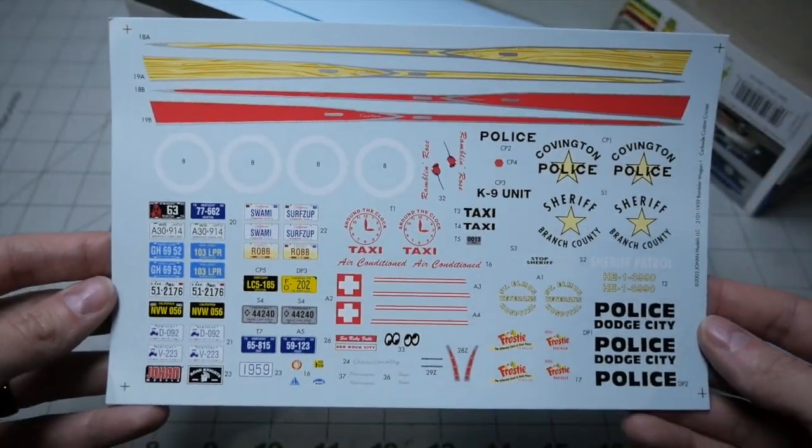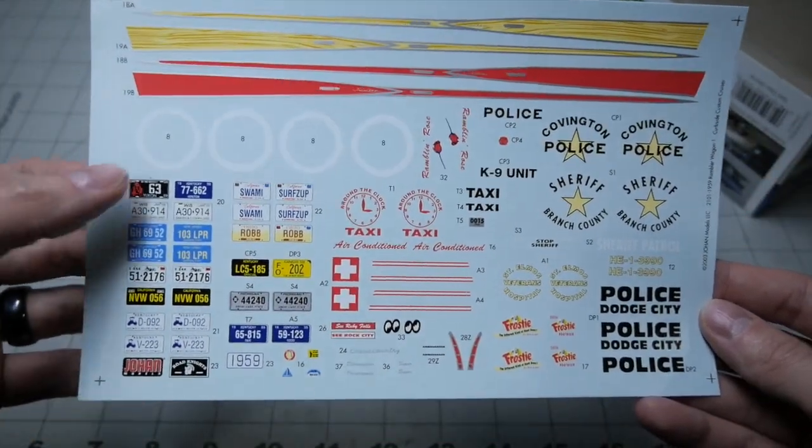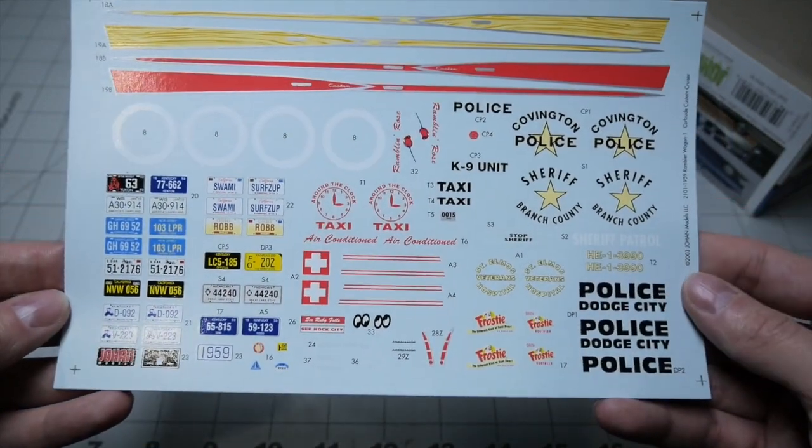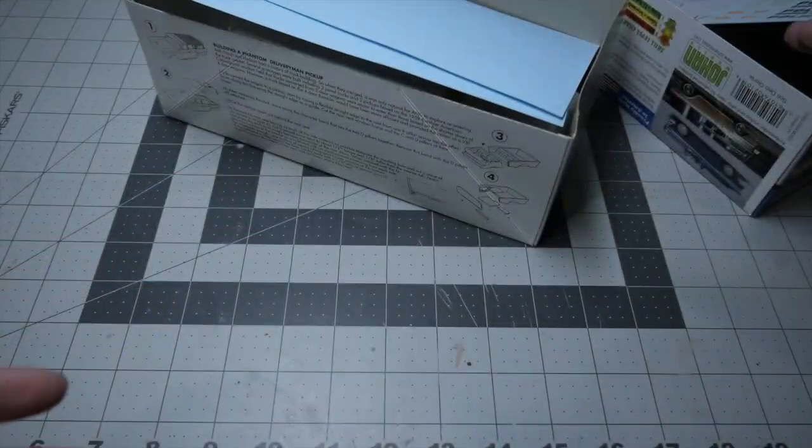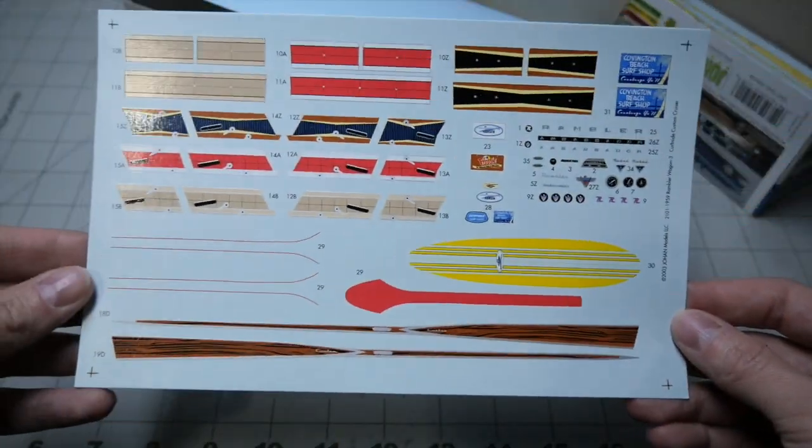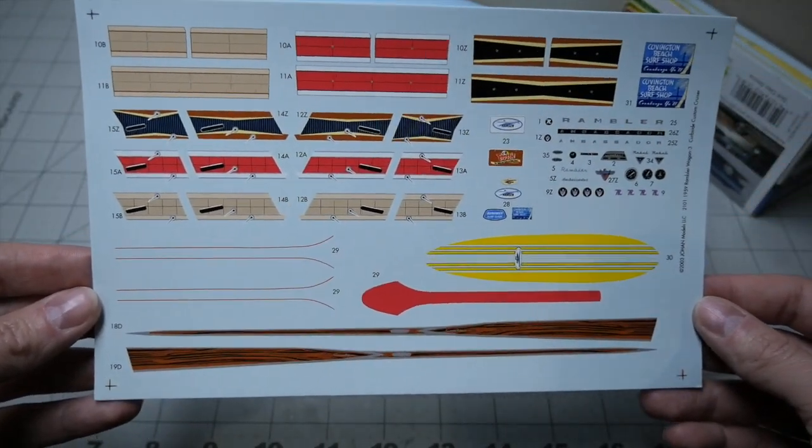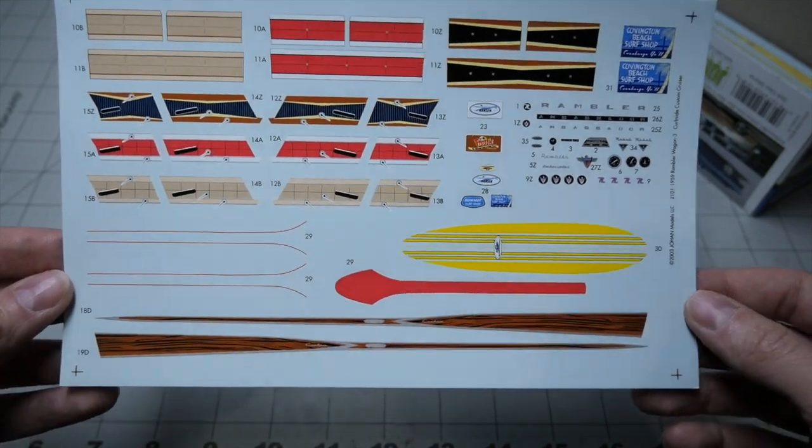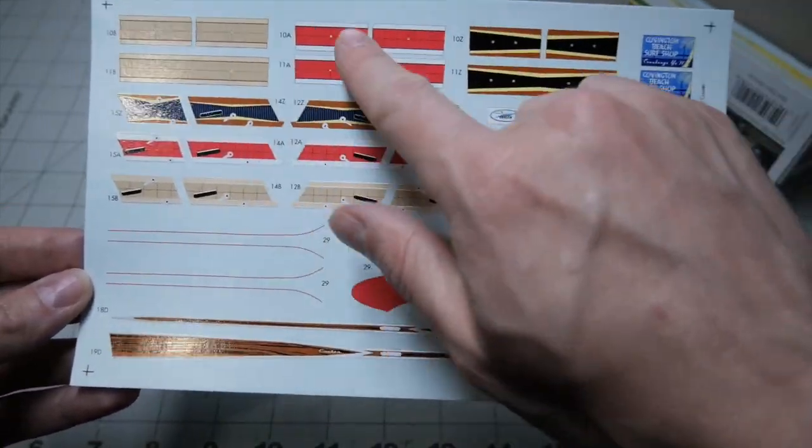First we have the first decal sheet with pretty cool license plates. The next decal sheet has different interior decals.